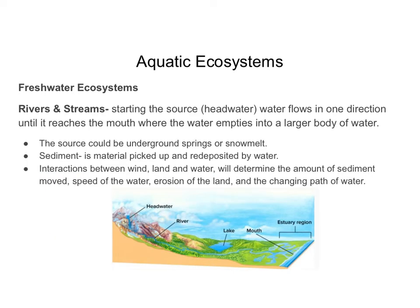One freshwater ecosystem is rivers and streams. Starting at the source, also called the headwater — shown here as the start of the river or stream — water flows in one direction down that mountain until it reaches the mouth, which is where the water empties into a larger body of water such as a lake or an ocean. The headwater source could be an underground spring or snowmelt.